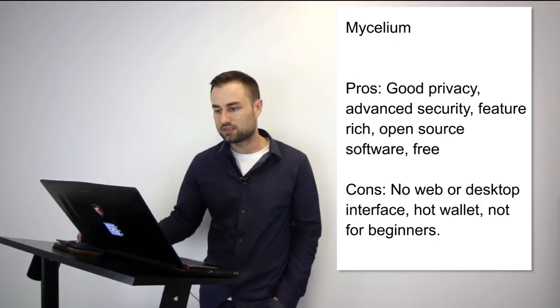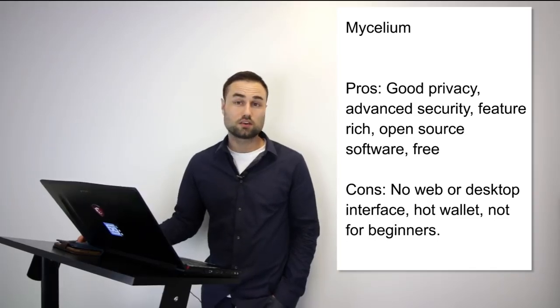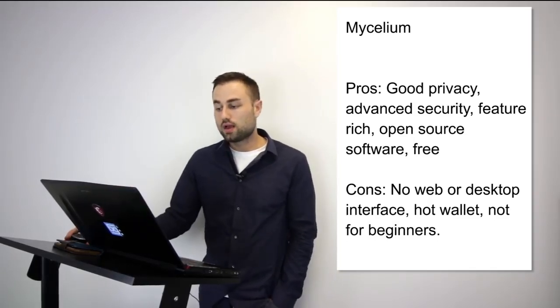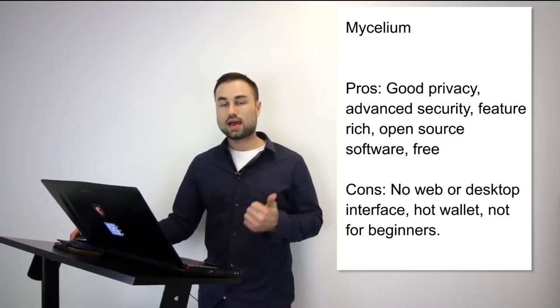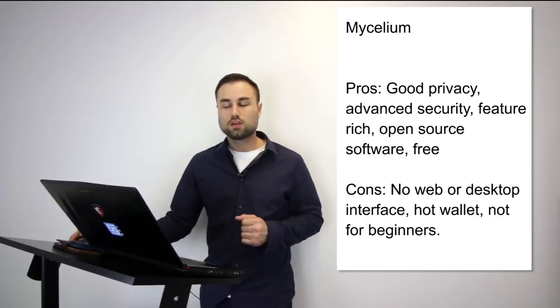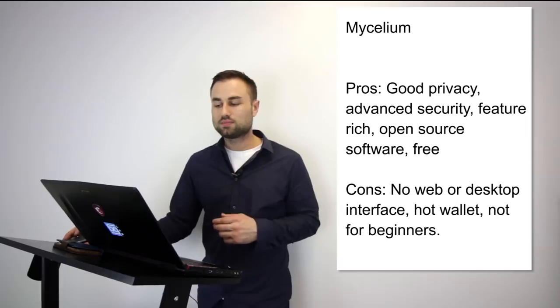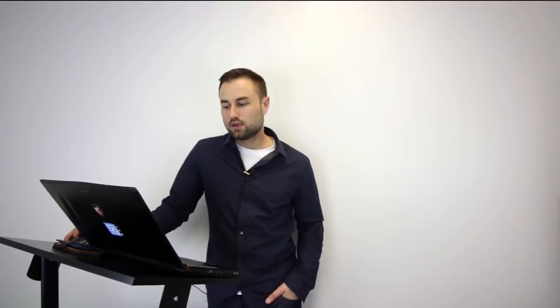Number two is Mycelium — a more advanced option. Currently it's only for Bitcoin, but they have plans for multi-currency support including Ethereum. It's available for both Android and iPhone. The pros: great privacy, advanced multi-signature security, open source, and free. The cons: no web or desktop interface, it's a hot wallet, and it's not the best for beginners. I've used it — the user interface is really good.